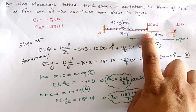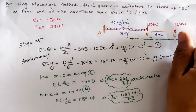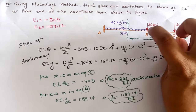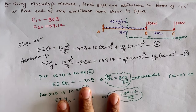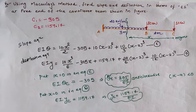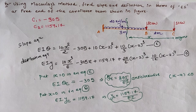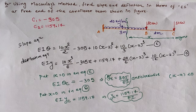If we have to calculate slope and deflection at point B, we put x = 2 meters in both equations and calculate accordingly. Thus we can calculate slope and deflection at any point on the beam using Macaulay's method and the elastic curve equation. Thank you.